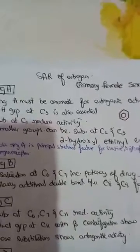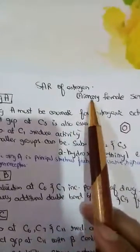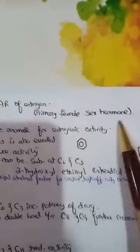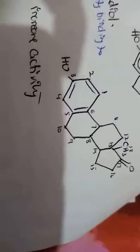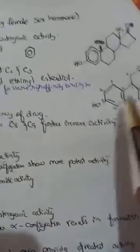Welcome to another video. In this video we will study about the SAR of estrogen. Estrogen is a primary female sex hormone. This is the structure of estrogen. It contains four rings: three six-membered rings and one five-membered ring. We will study about the SAR of estrogen of each ring separately.